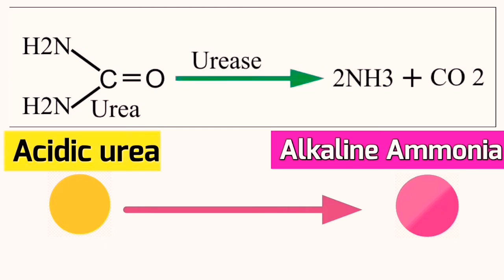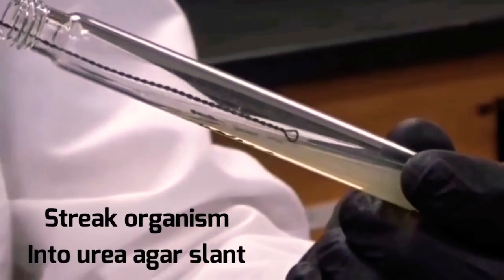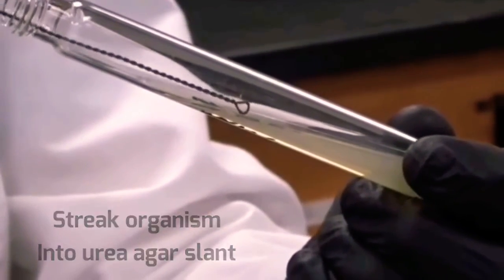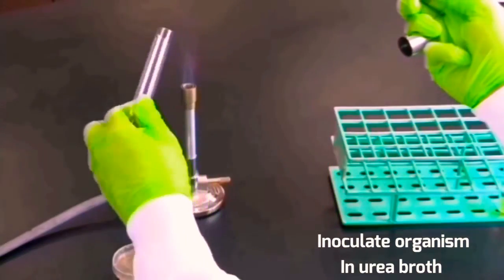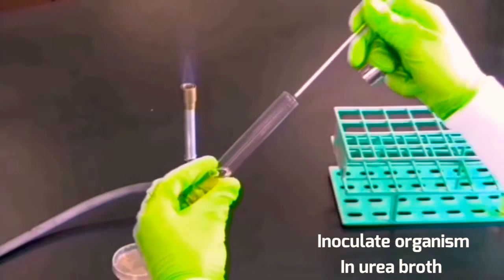For practical work, streak microorganism into urea agar slant or inoculate microorganism into urea broth. Incubate tubes at 37 degrees Celsius for one to two days.